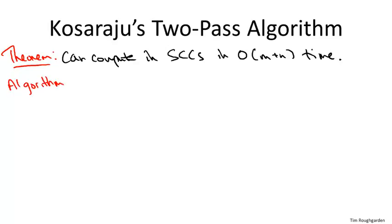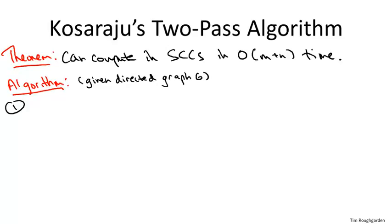Kosaraju's algorithm is shocking in its simplicity — it has three steps. First, very mysteriously, we're going to reverse all of the arcs of the given graph. It's totally unclear why that would be an interesting thing to do, yet.